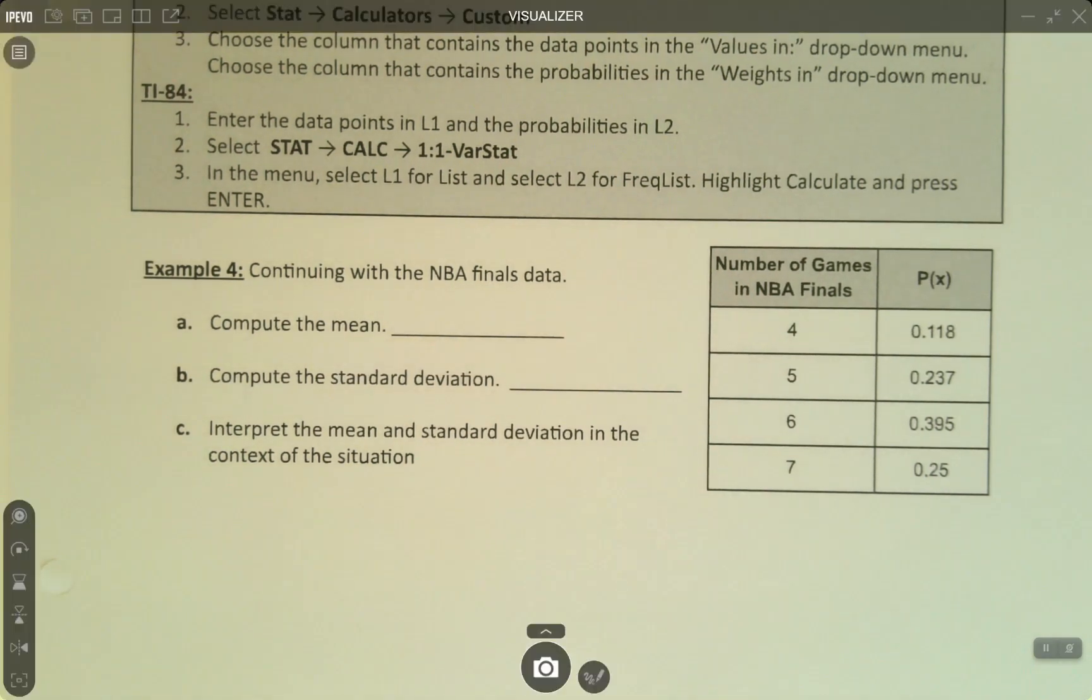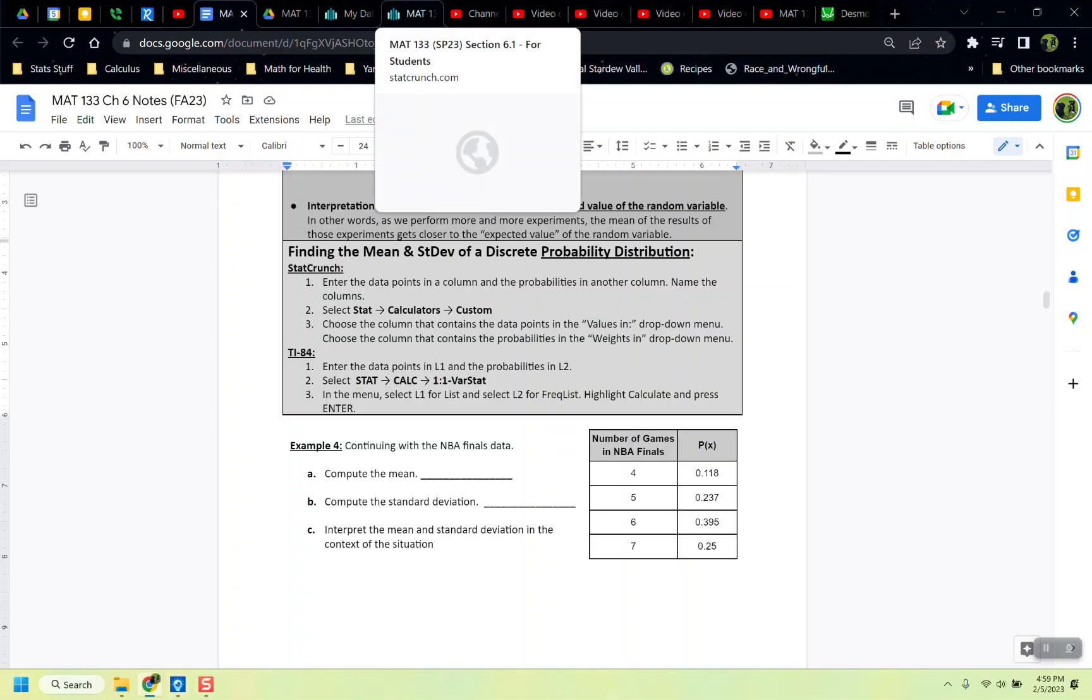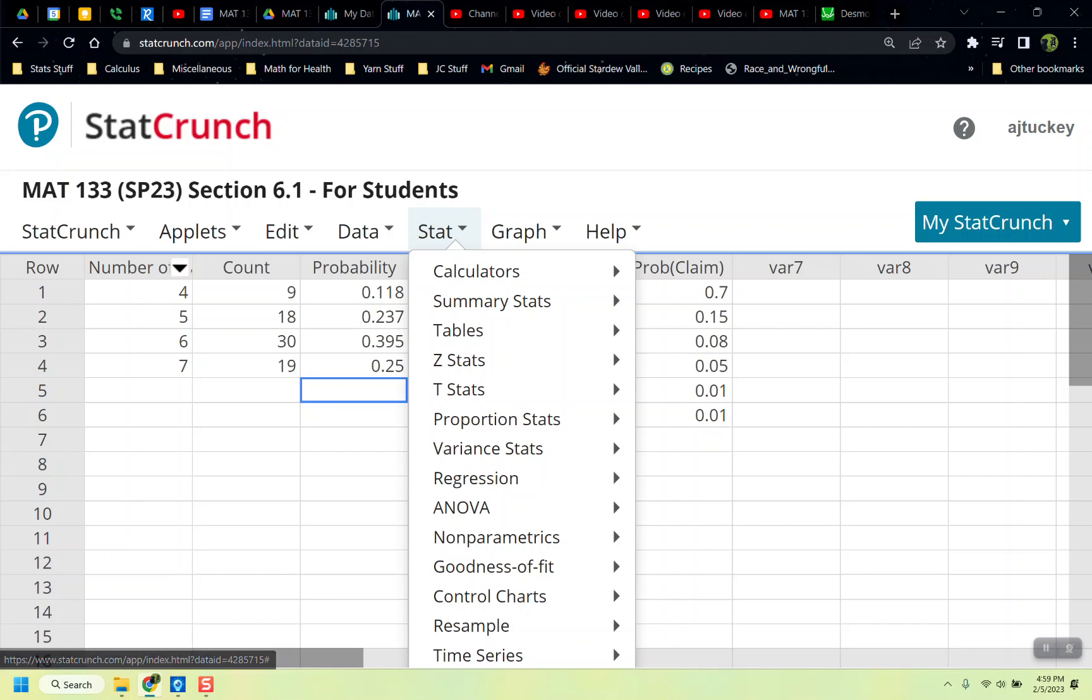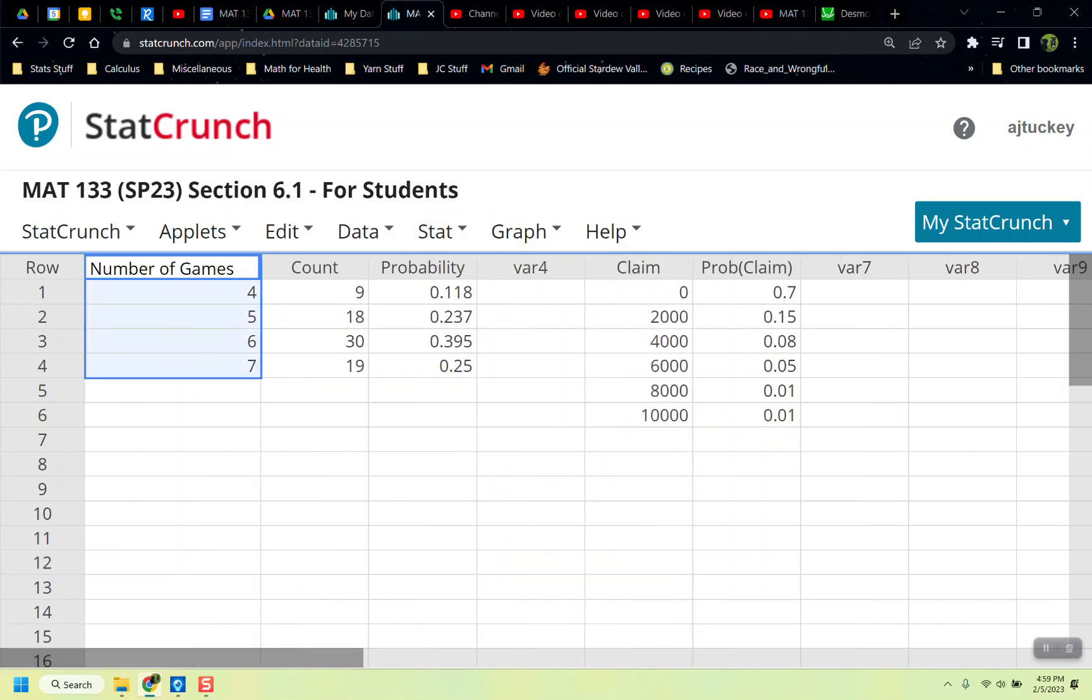Okay, so let me show how to do this in StatCrunch. And I actually uploaded this data set, I believe, right here. Okay, so I'll make this publicly available to you. So when we want to find the mean of this, it's the number of games is right here, and the probability to go with that is right here.